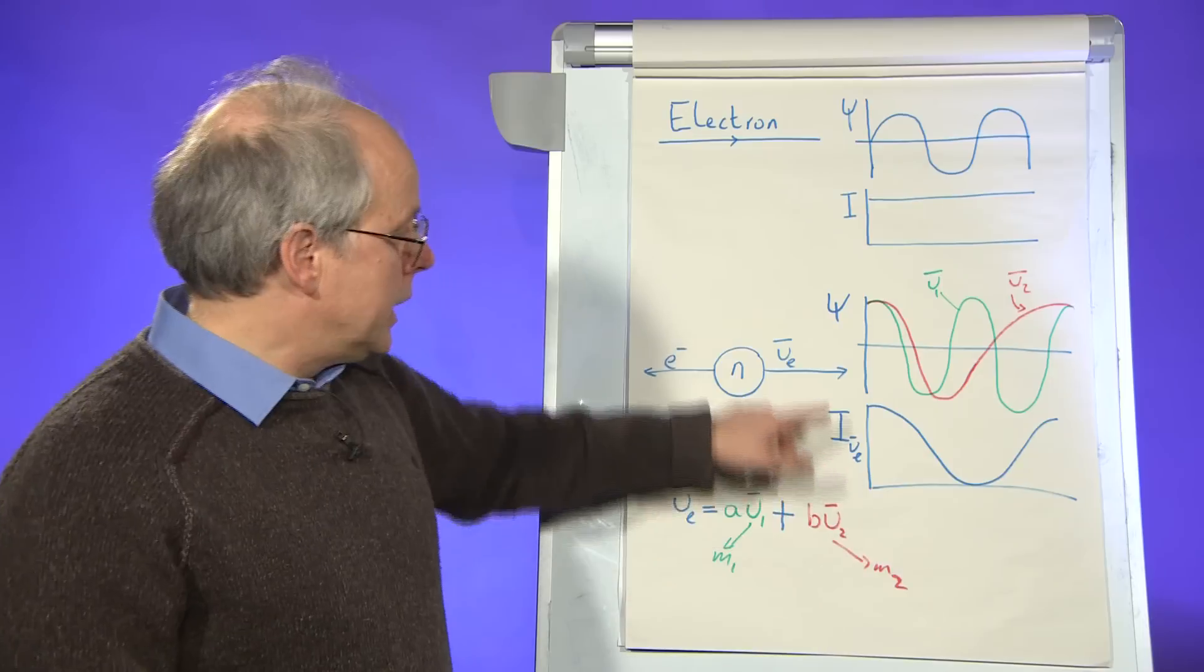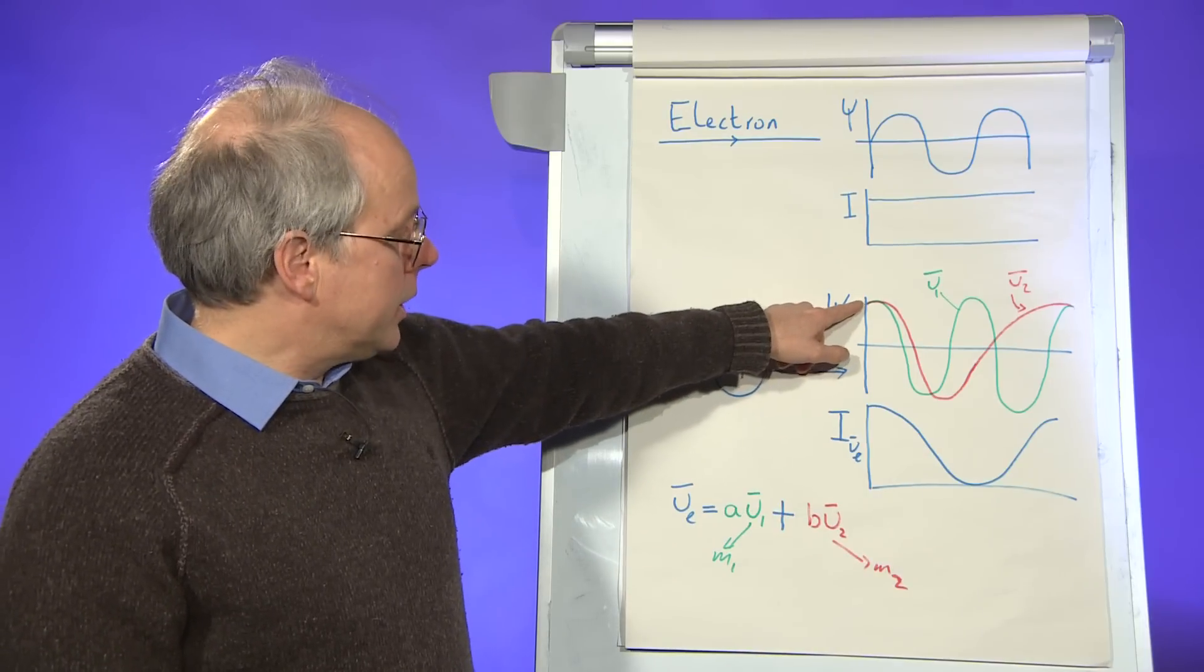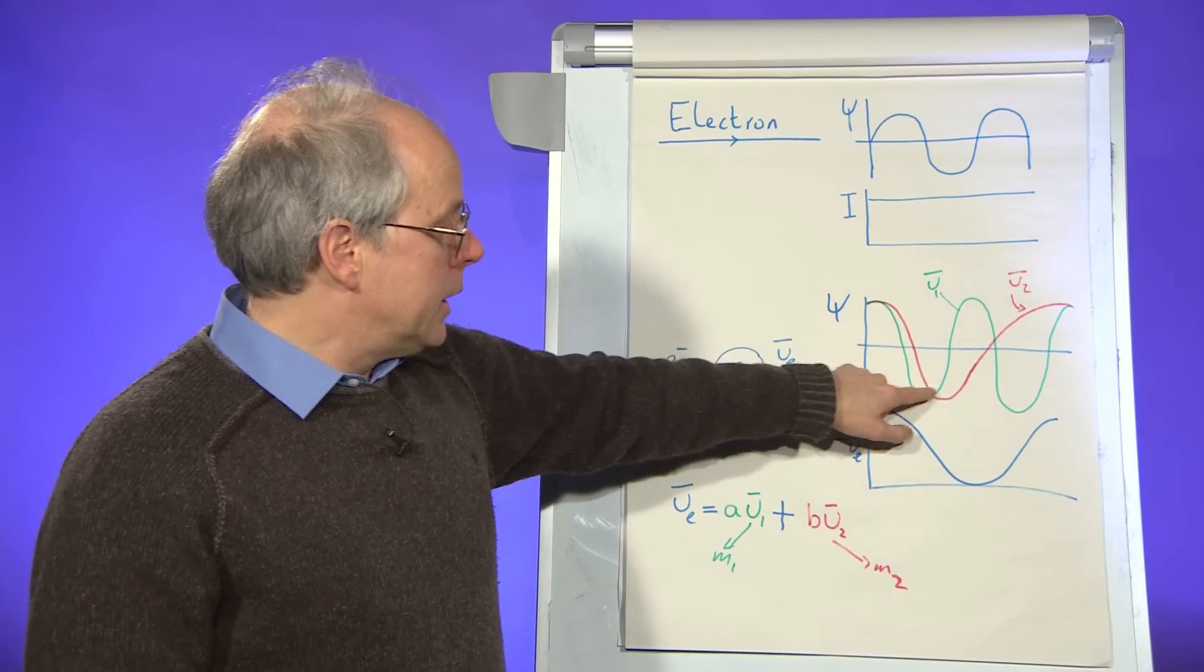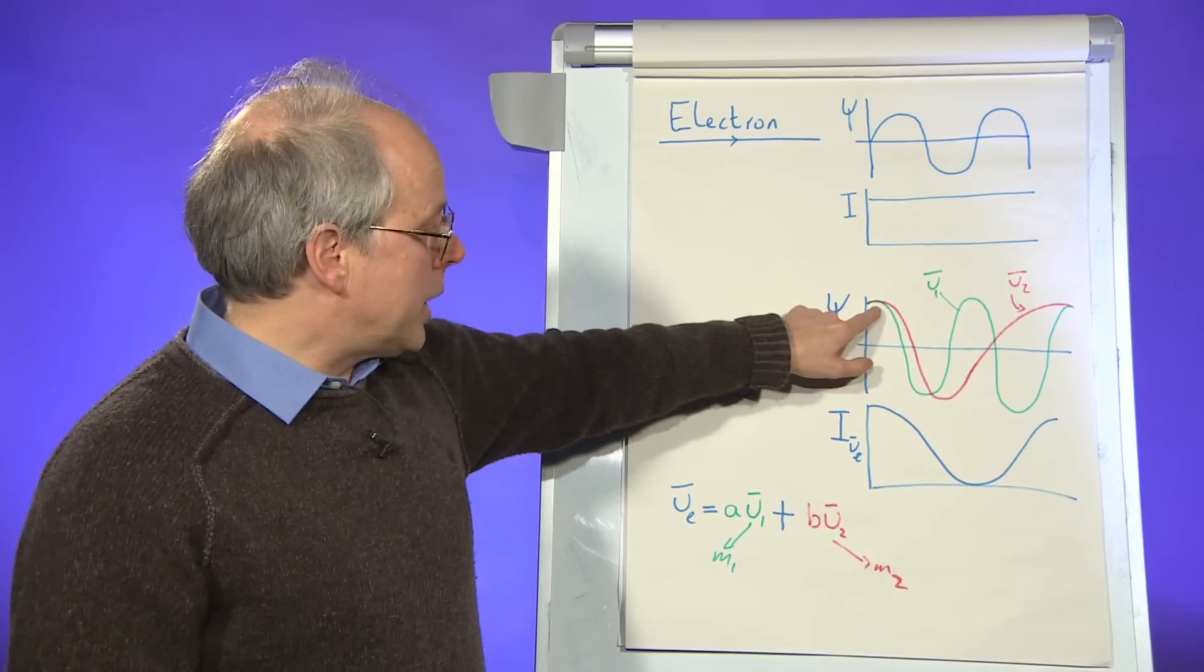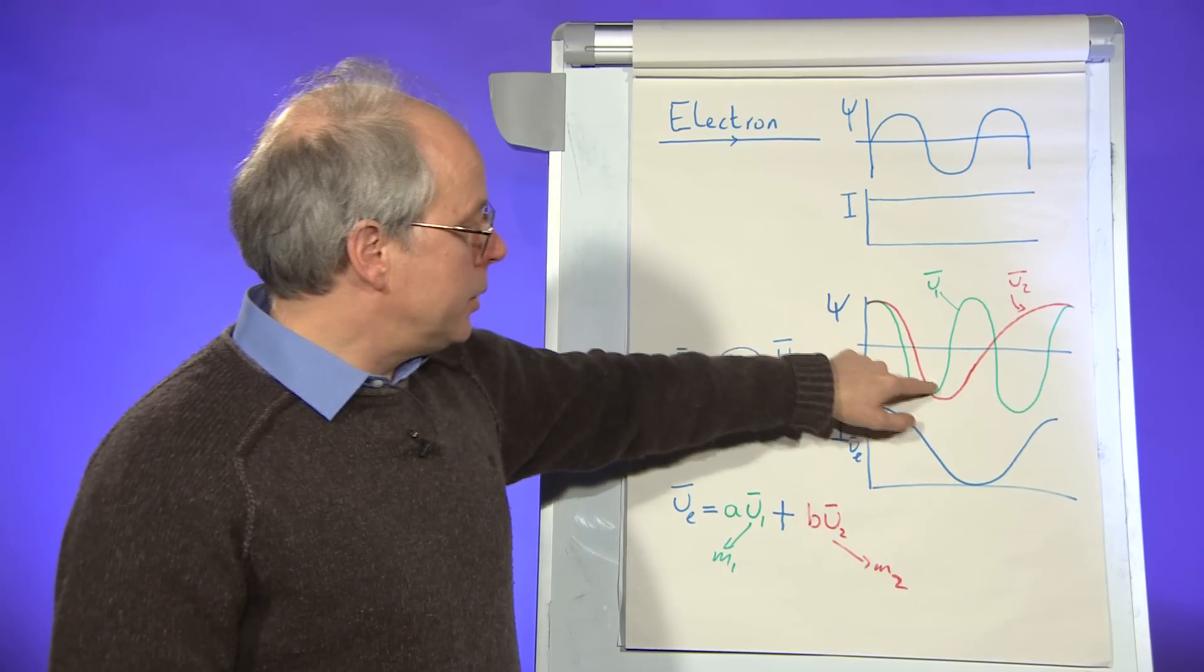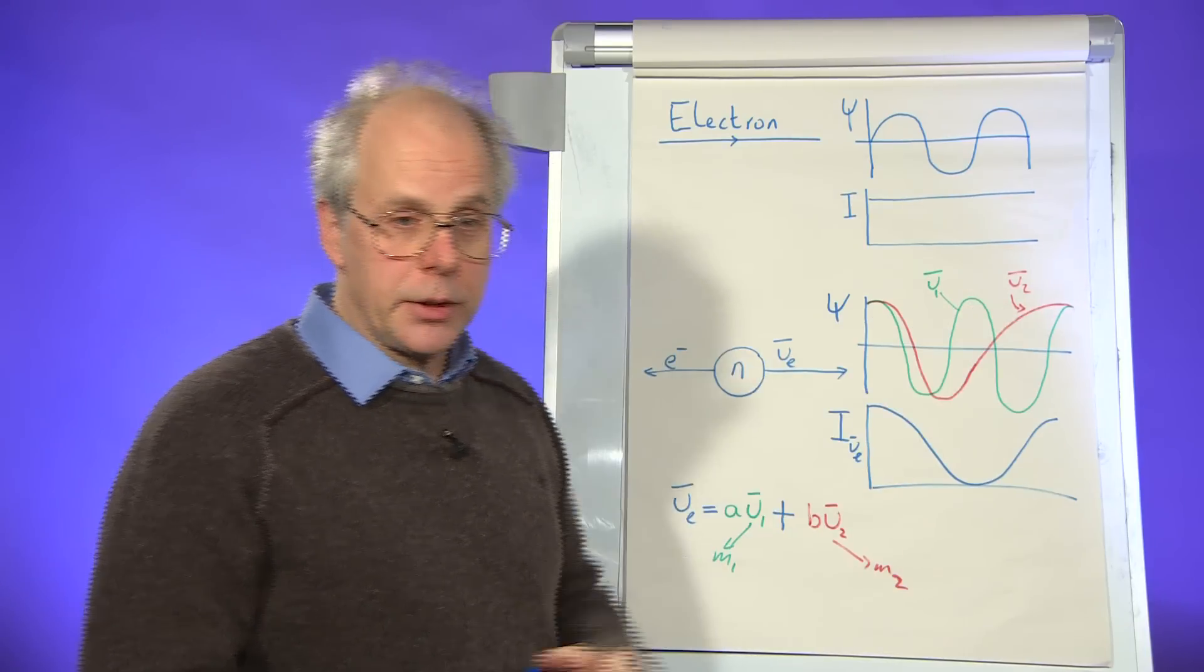So the matter wave corresponding to m1 is shown in green. So that's because it's got a certain mass, it has a certain wavelength. And this is m2, which has a different wavelength because it's got a different mass.